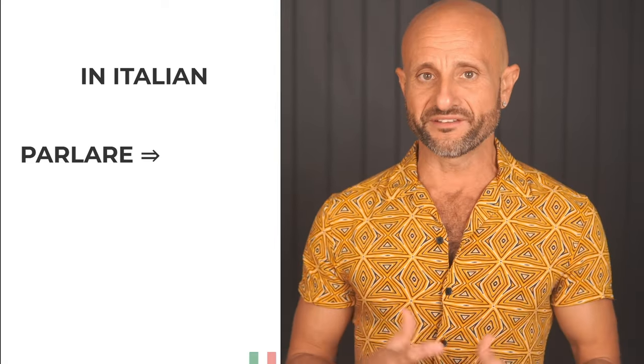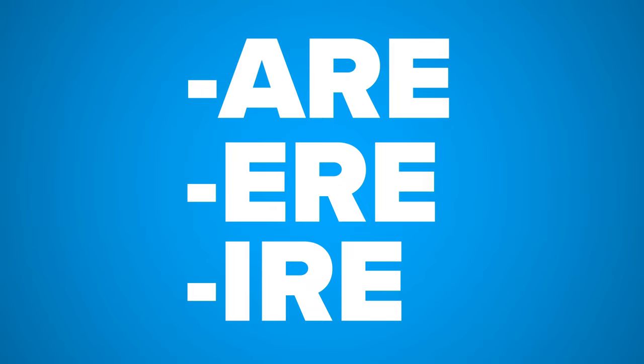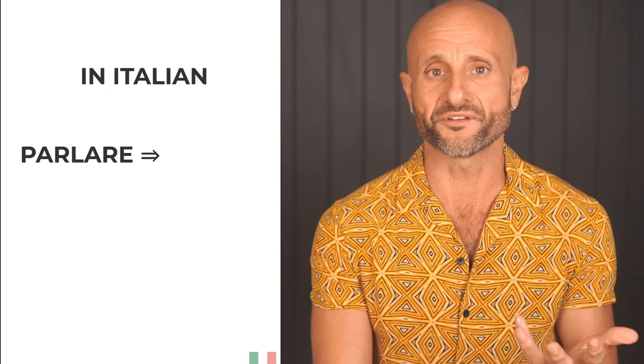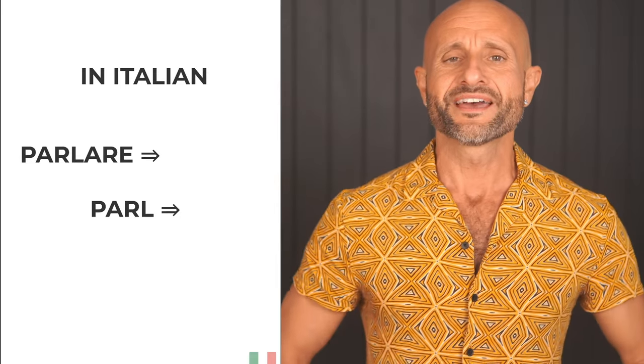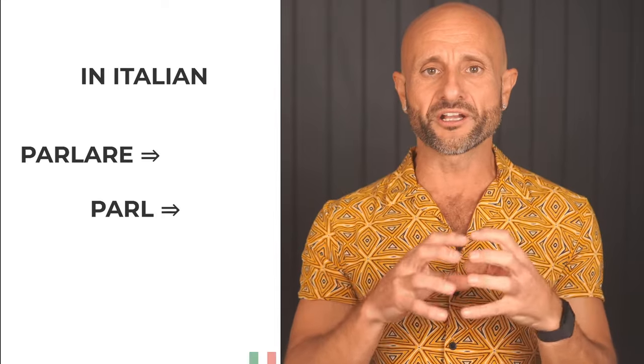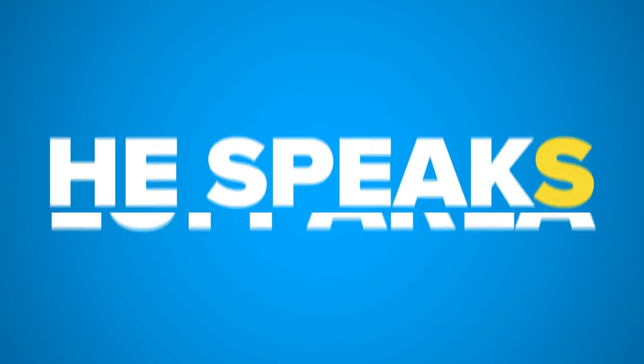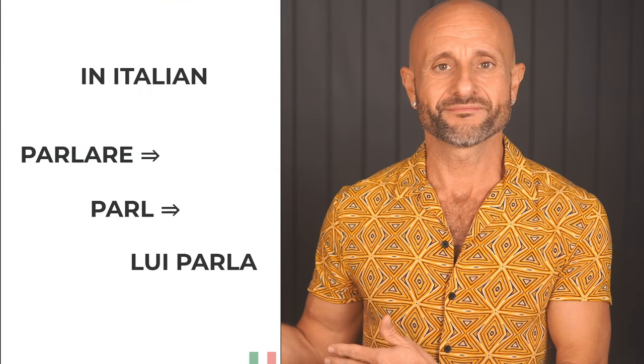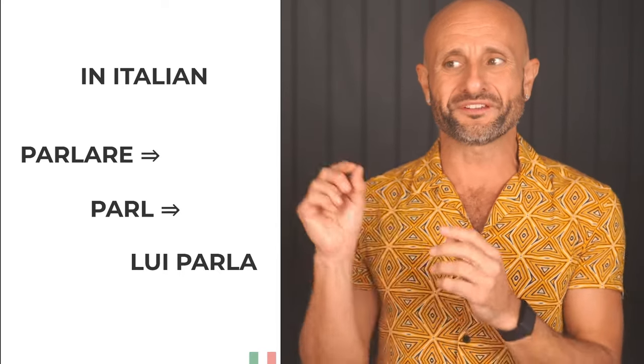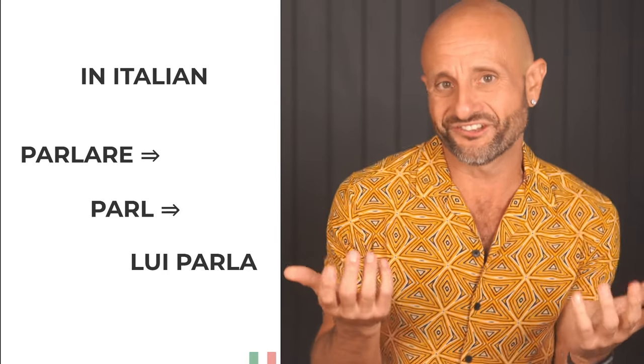In Italian, we have an infinitive. Infinitives end with -are, which is the group you're learning today, or -ere and -ire. You can tell it's a verb because you get used to the -are ending. Parlare is the idea of speaking. That -are part is not really unique — it doesn't carry any information other than this is the infinitive. So what is left when we get rid of it is parl. That is the stem of the verb — what really carries the meaning of speaking. So if I want to say he speaks, in English you attach S; in Italian we attach A. Lui parla. He speaks. This is the basic idea.